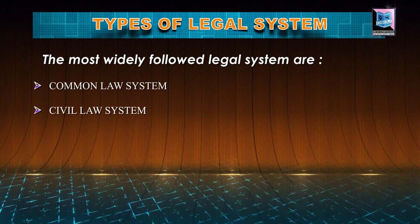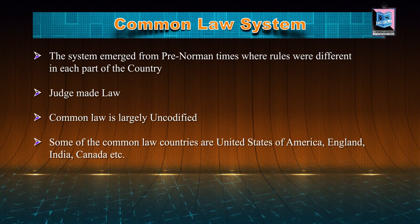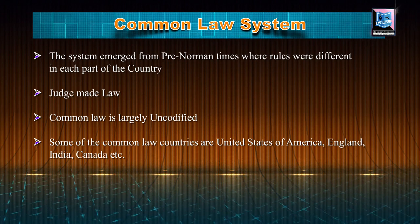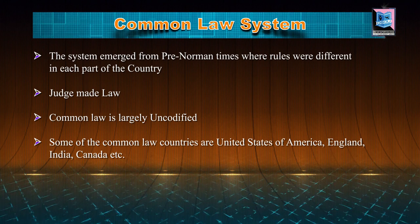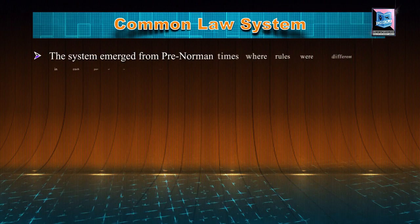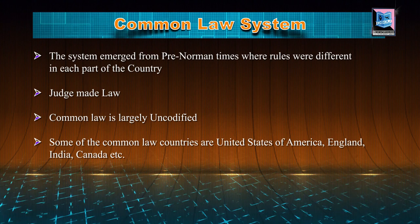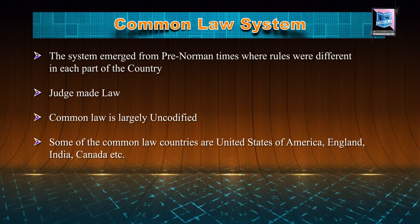Let's see what is the common law system. Common law is generally said to have emerged from pre-Norman times where rules were different in each part of the country. To provide consistency, justices or judges created a common law by drawing on customs across the country and rulings by monarchs. These rules developed organically and were rarely written down; therefore, it is said to be uncodified. This implies that there is no complete compilation of legal principles and statutes. While common law relies on few statutes, which are a result of decisions of the legislative authority, it is extensively based on judicial decisions made in comparable cases. This common law system is mostly followed in the US, England, Canada and similar countries.